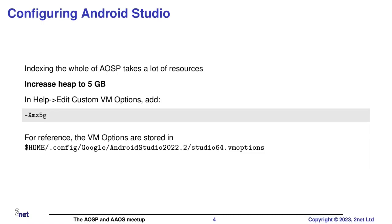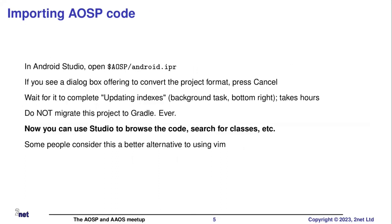You have to do a bit of fiddling around with Android Studio to increase the memory, because once it starts indexing, the entire AOSP code base is going to consume all your memory. At the very least, you need to increase the heap size to five gigabytes, maybe more. Then you can open the IPR file you generated. It will start indexing, which takes a long time — several hours — so just leave it. Every now and again it invites you to migrate AOSP to Gradle. I never clicked Yes; I imagine it will go horribly wrong, so don't.